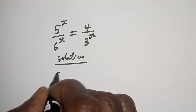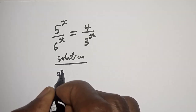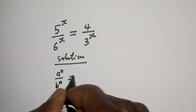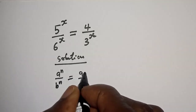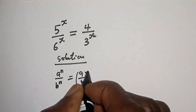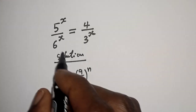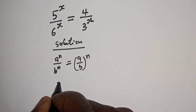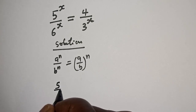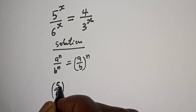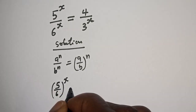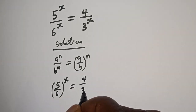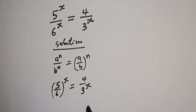Remember this exponential rule: if you have a raised to power n over b raised to power n, this is equal to a over b raised to power n. So this 5 raised to power s divided by 6 raised to power s can be written as 5 over 6 raised to power s, which is equal to 4 over 3 raised to power s.